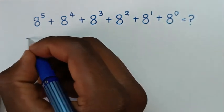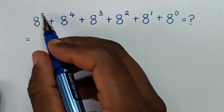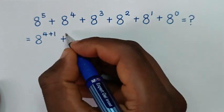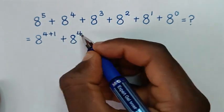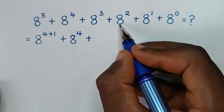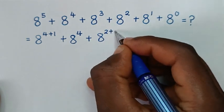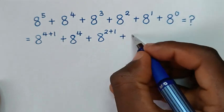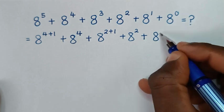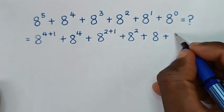So it will be equal to: 8 power 5 is same as 8 power 4 plus 1, then plus 8 power 4, then plus 8 power 3 is same as 8 power 2 plus 1, then plus 8 power 2, then plus 8 power 1 which is same as 8, plus 8 power 0 which is 1.